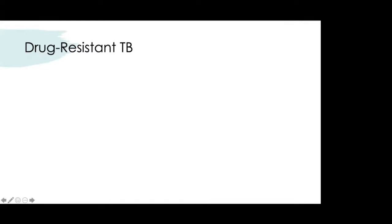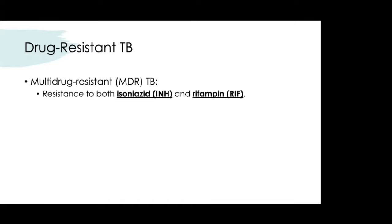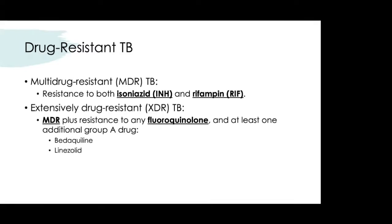Multi-drug resistant TB (MDR-TB) is when tuberculosis is resistant to both isoniazid and rifampin, which are two backbone drugs for TB treatment. Extensively drug-resistant TB (XDR-TB) is defined as MDR plus having resistance to any fluoroquinolone and at least one additional Group A drug. This includes fluoroquinolones like ciprofloxacin and moxifloxacin, as well as bedaquiline and linezolid.